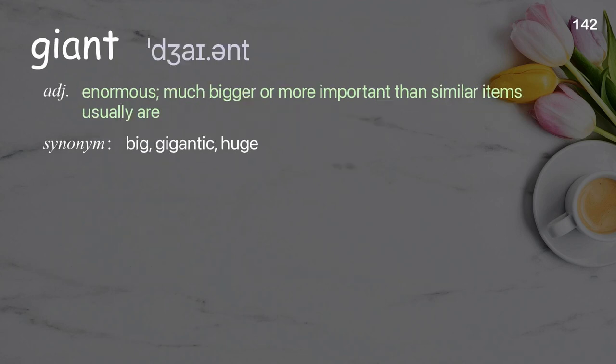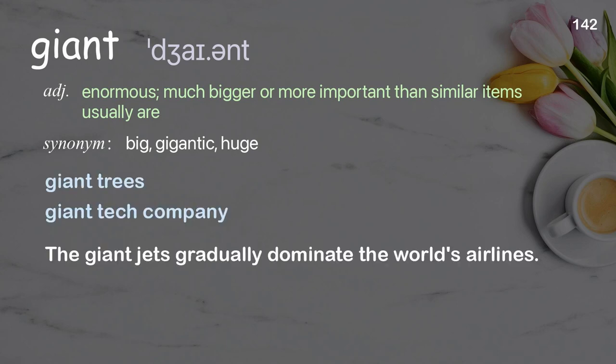Giant: extremely big; much bigger or more important than similar items usually are. Examples: giant trees, giant tech company. The giant jets that gradually dominate the world's airlines.